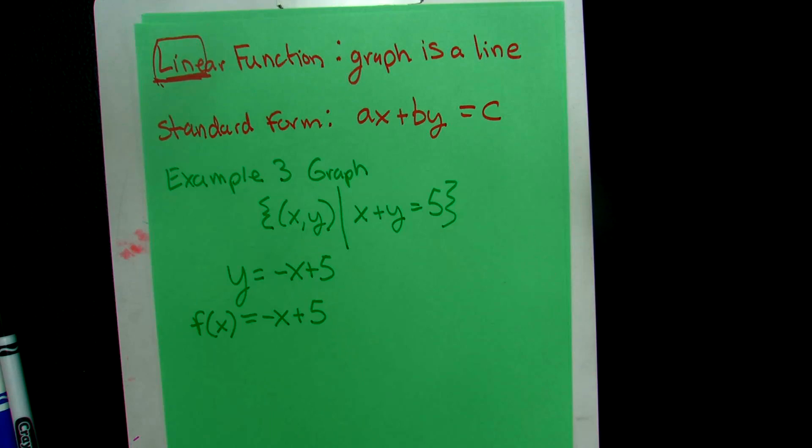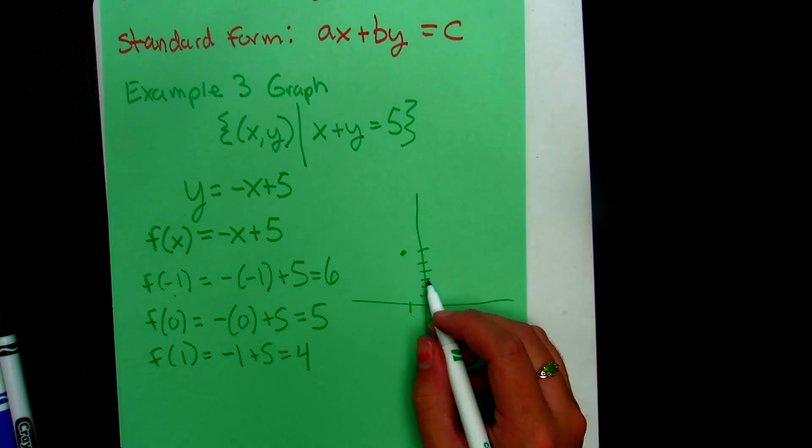And then I'm going to select some x values. I like to do a few x values. 3 is always a good number. So I like to do a negative, a 0, and a positive. That usually works for me. So I'm going to do -1. So I have -(-1) + 5, which ends up being 6. Then I'm going to do 0, which ends up being 5. And when x is 1, y is 4.